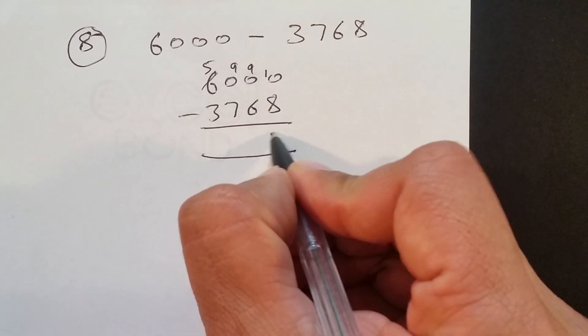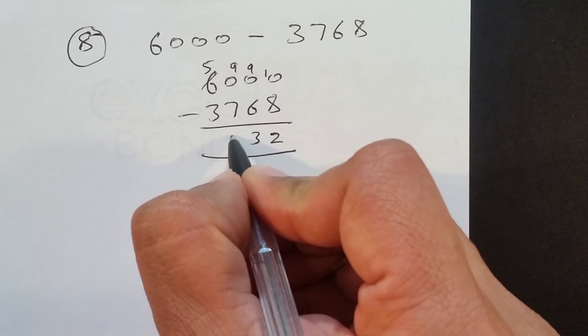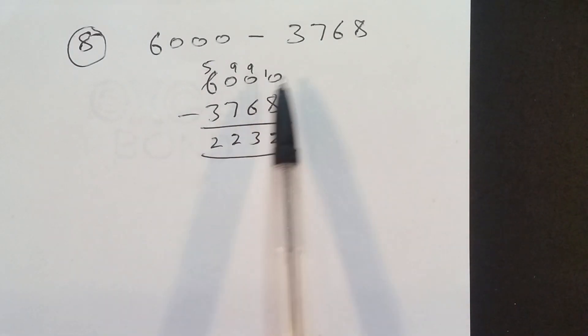You should remember that. Same subtraction. 10 take away 8, which is 2. 9 take away 6 is 3. 9 take away 7, which is 2. 5 take away 3 is 2. Done. That's it. This is the main thing you have to remember. Let's move to the next one and the last one.